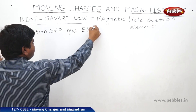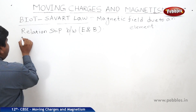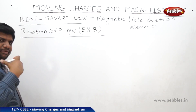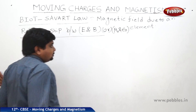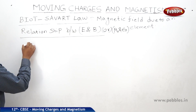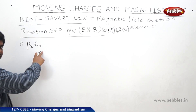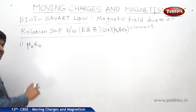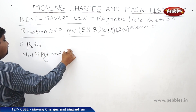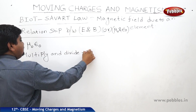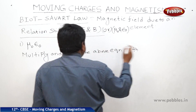Between E and B: in E it is 1 by 4π epsilon naught; in B it is mu naught by 4π. So the relationship between E and B is essentially a relationship between mu naught and epsilon naught. Take mu naught times epsilon naught — this is the first step. I am multiplying this whole expression with 4π and dividing by 4π.